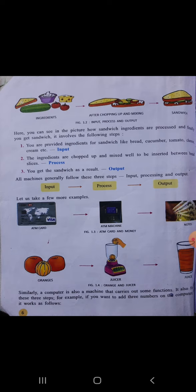The second example is for an ATM card, which was also explained in your summer task. When we insert an ATM card into a machine, it's an instruction we give to the machine, so it is called input. The machine works on it, so it is called process. It gives you money as you required, so it's a result — so it is called output.